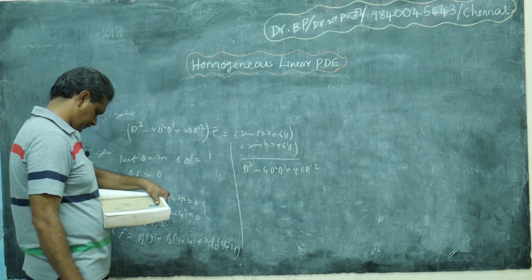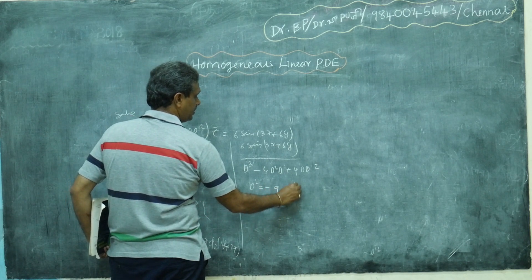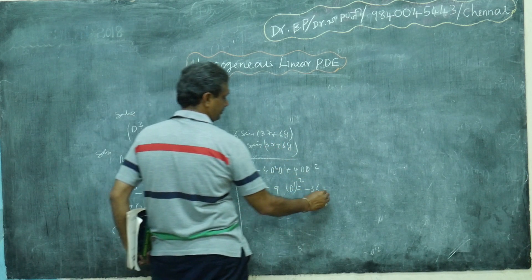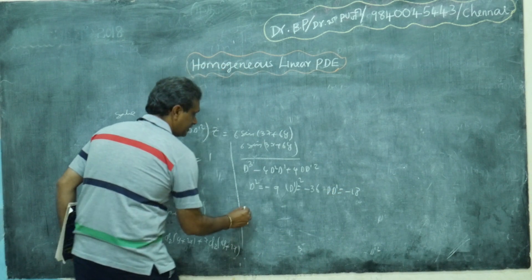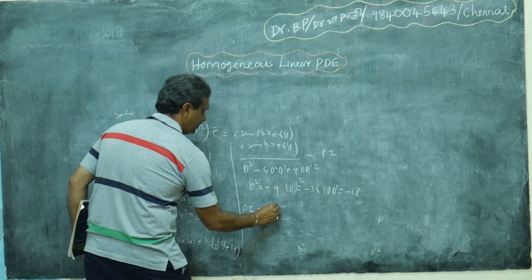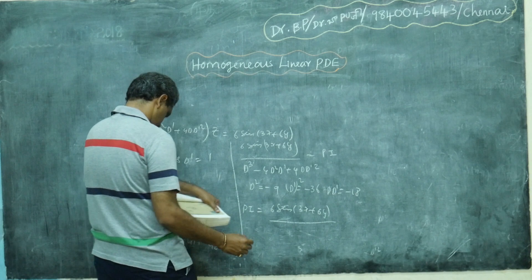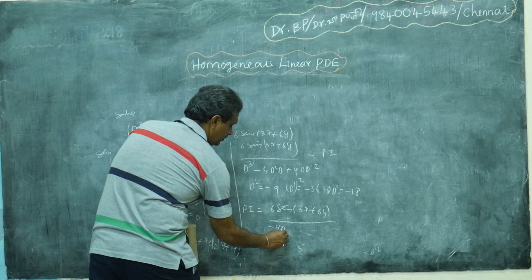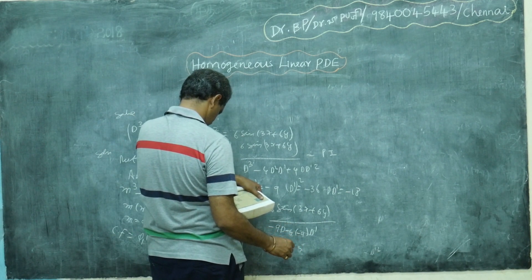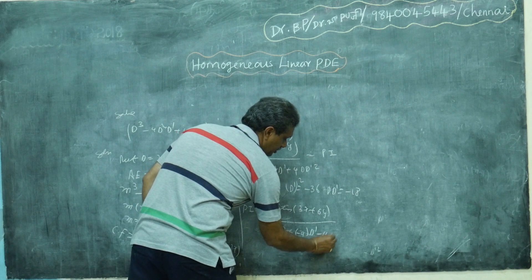Now, for PI, put D² = -9 (since a = 3), D'² = -36 (since b = 6, so -b² = -36), and DD' = -ab = -(3)(6) = -18. Substitute back here. So PI = 6 sin(3x + 6y) in the denominator: D² gives -9, and DD'² substituting gives -144D.